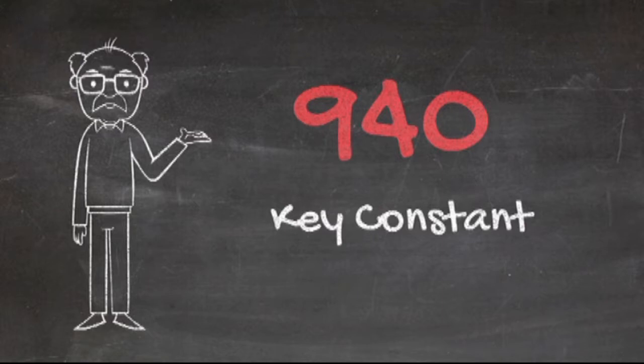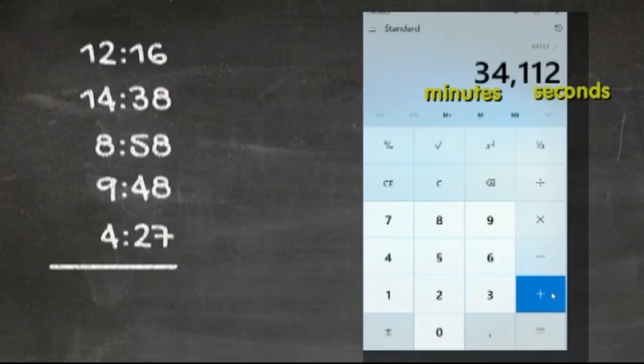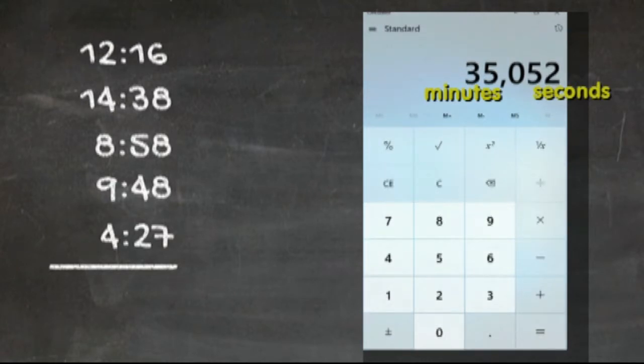It is 940. We're going to add that 940 to our 34 minutes and 112 seconds to get, ta-da, 35 minutes and 52 seconds. Note that the zero keeps them separate again. What the 940 actually did was add one to the minutes group while simultaneously subtracting 60 from the seconds group. That one minute added equals 60 seconds we took away.